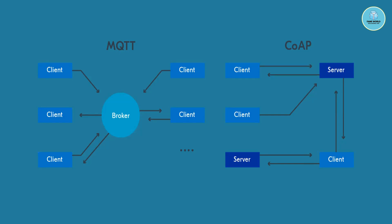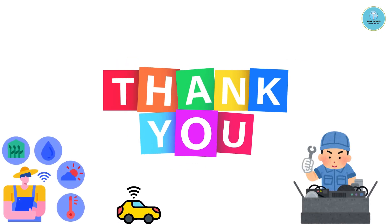If I talk about CoAP — the Constrained Application Protocol — it is a web transfer protocol designed to work with constrained networks and devices, such as those used in the Internet of Things. CoAP is lightweight and efficient, and it uses UDP, the User Datagram Protocol. We will also be covering TCP/IP and cloud-related topics in upcoming sessions.